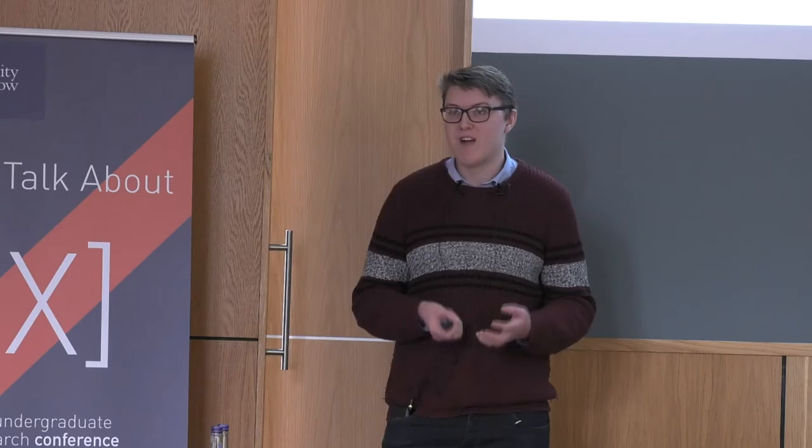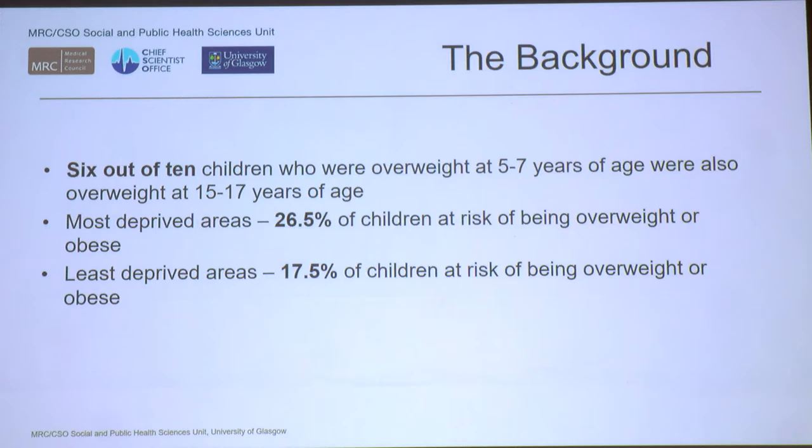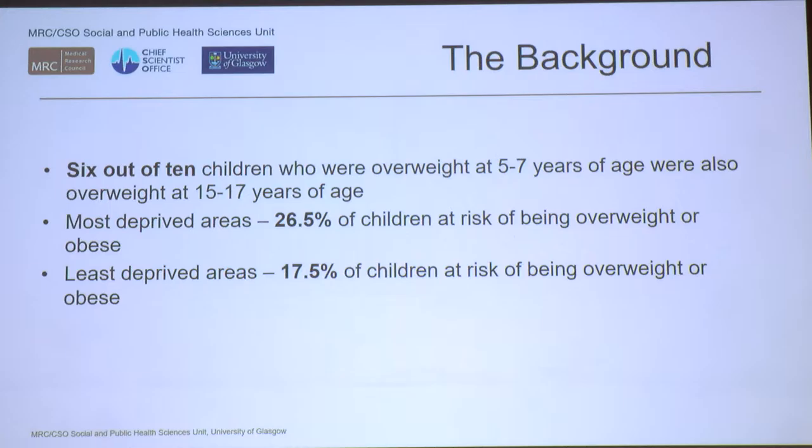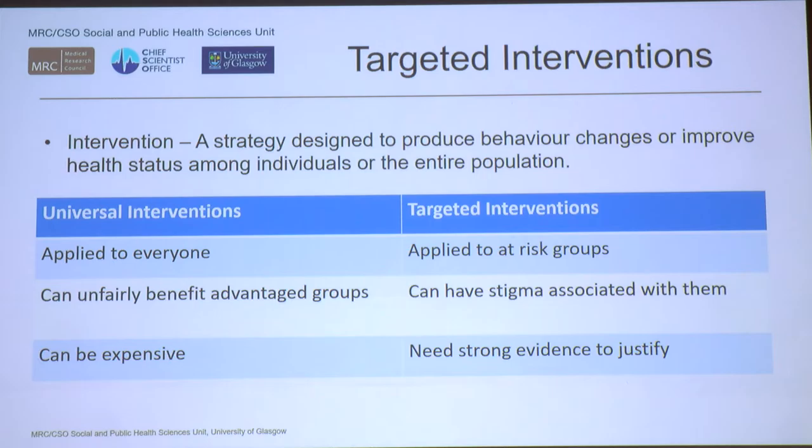The second main point relates to inequalities. Since the 1990s, inequalities in terms of health have been rapidly widening with regards to obesity. Nowadays, at the P1 assessment in Scotland — that's at five years old — 26.5 percent of children in the most deprived areas are at risk of being overweight, compared to just 17.5 percent in the least deprived areas. So there's a context of rapidly widening inequalities.